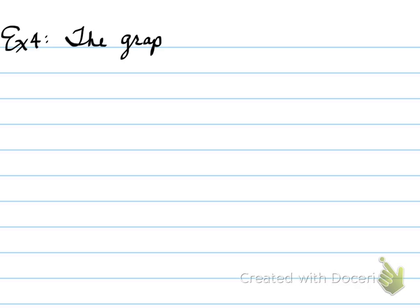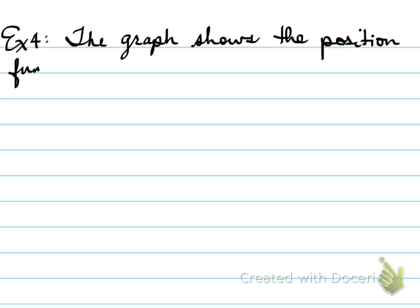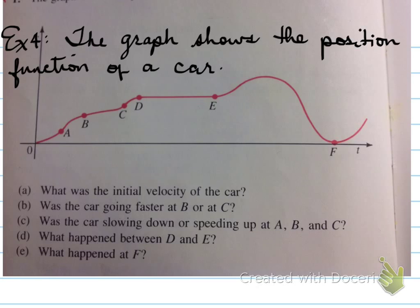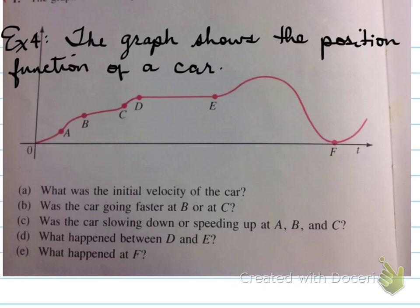Example 4: Let's look at the position function of a car. The questions ask: what was the initial velocity of the car? Was the car going faster at B or at C? Was the car slowing down or speeding up at A, B, and C? What happened between D and E? And what happened at F? This is an important graph to understand.